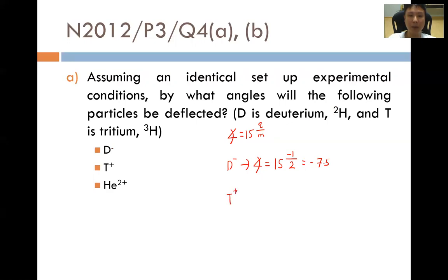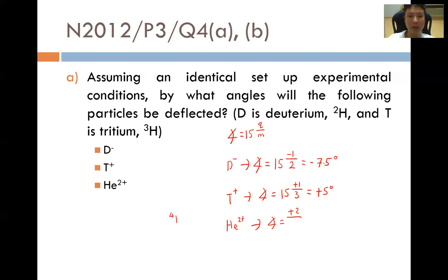For the tritium ion, the angle of deflection equals 15 multiplied by the charge of plus 1 over the mass of tritium, which is 3, giving positive 5 degrees — a positive value indicating the tritium particle will be deflected towards the negative plate. For the helium 2+ particle, the angle of deflection equals 15 multiplied by the charge of plus 2 over the mass of 4, giving positive 0.5 degrees.